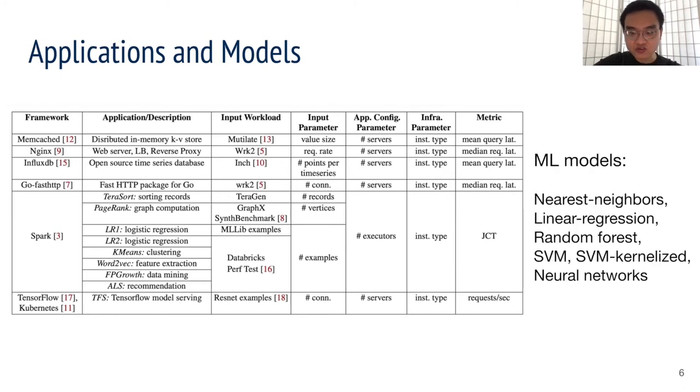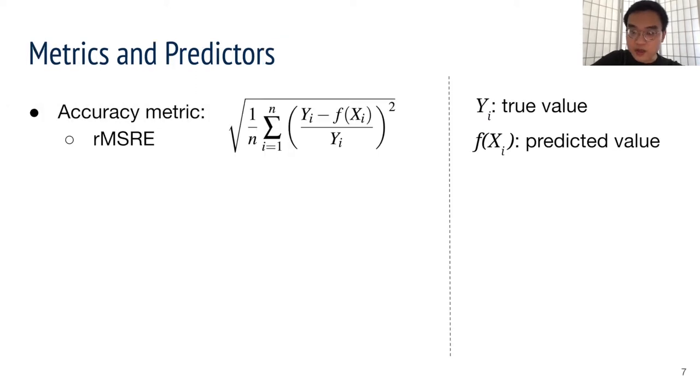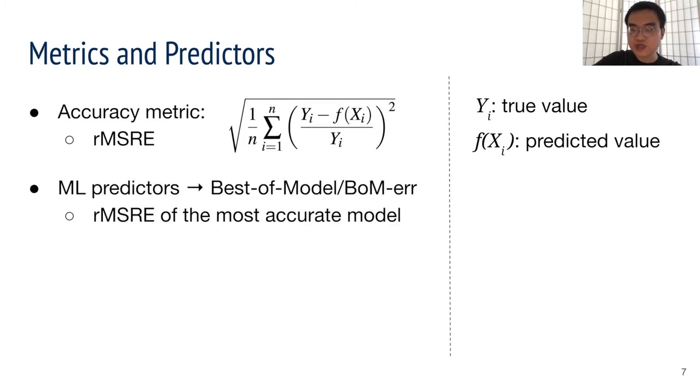We pick six commonly used machine learning models, from simple nearest neighbors to more advanced neural networks, and we handle them with standard machine learning procedures. The predictors will take the values of these parameters to learn to predict the performance metric. To evaluate these predictors, we pick a standard accuracy metric RMSRE, and we take the best model's accuracy as the best of model error, or BoM error for short.